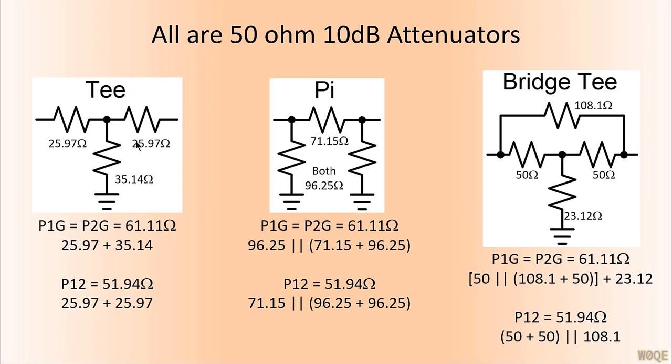Pin 1 to ground which is the sum of these two resistors. Pin 2 to ground which is the sum of these two resistors, and pin 1 to pin 2 is the sum of these two resistors. We get the value if we're assuming a 10 dB attenuator. This attenuator value just picked. Any value would work just fine. It will give us different values here but I'm trying to show that all of them are exactly the same. We get 61.11 ohms, 51.94 ohms.